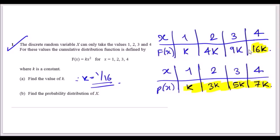Eventually you reach 16k. One key property of the cumulative distribution function is that the final value represents all probabilities summed, so 16k = 1. Therefore, finding k: k equals 1 over 16, either by adding up the probabilities or by setting the final CDF value equal to 1.